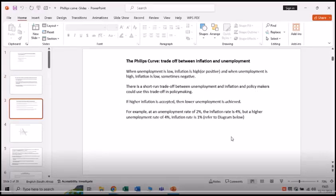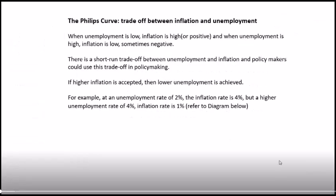The Phillips curve is a trade-off between inflation and unemployment. The IS curve represents events in the goods market, the LM curve represents events in the financial market, and the PC curve (Phillips curve) records the relationship between unemployment and the inflation rate. When unemployment is low, inflation is high; when unemployment is high, inflation is low — and sometimes negative. So there's a negative relationship between unemployment and the inflation rate.